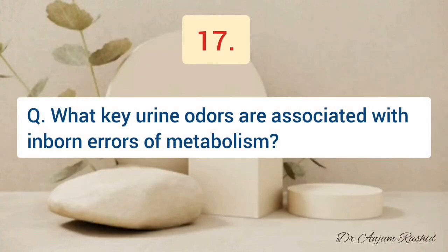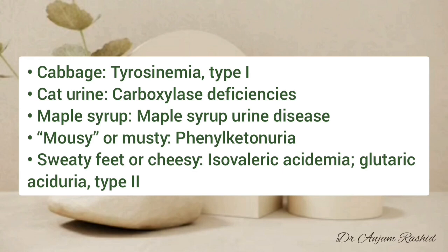What key urine odors are associated with inborn errors of metabolism? A cabbage odor is present in type 1 tyrosinemia; cat urine odor in carboxylase deficiency; maple syrup odor in maple syrup urine disease; mousy or musty odor is present in phenylketonuria; and sweaty feet or cheesy smell is present in isovaleric acidemia and type 2 glutaric aciduria.